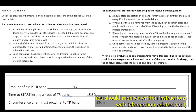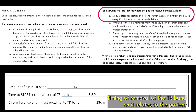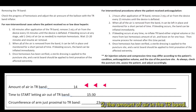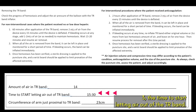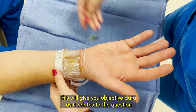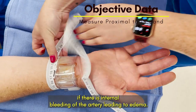You should receive written instructions with information related to: 1. Timing of removal of the TR band as it relates to the patient receiving anticoagulation or not — please verify with orders in the EMR. 2. The amount of air in the TR band. 3. The time to start letting air out of the TR band. 4. The circumference of the arm just proximal to the TR band, which will give you objective data as it relates to the question of whether there is internal bleeding of the artery leading to edema.